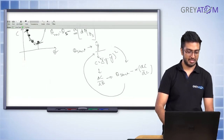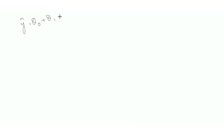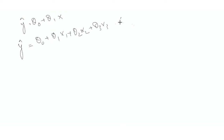Earlier, y prediction was theta naught plus theta 1 times x. Now there isn't just one x — there's x1, x2, x3, and so on. So now y prediction equals theta 1·x1 plus theta 2·x2 plus theta 3·x3, and so on, all the way up to theta 50·x50 if you have 50 features.